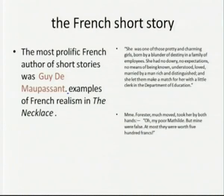Maxim Gorky was also writing novels and short stories at the same time, and all these writers — Tolstoy, Chekhov, Gorky — equally excelled in the novel form. Gorky's best known short story is '26 Men and a Girl.' Equally prolific is the French short story tradition. The most prolific French author of short stories was Guy de Maupassant, who dominated the French short story scene and indeed the entire domain of the short story. His 'The Necklace' is considered the perfect short story ever written, exemplifying French realism.